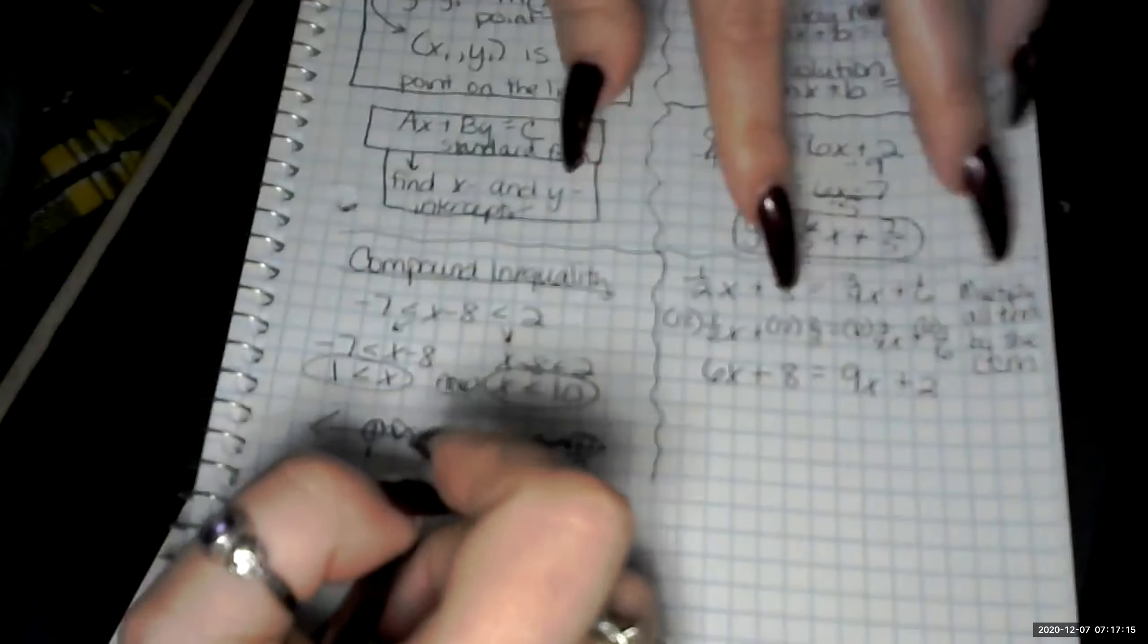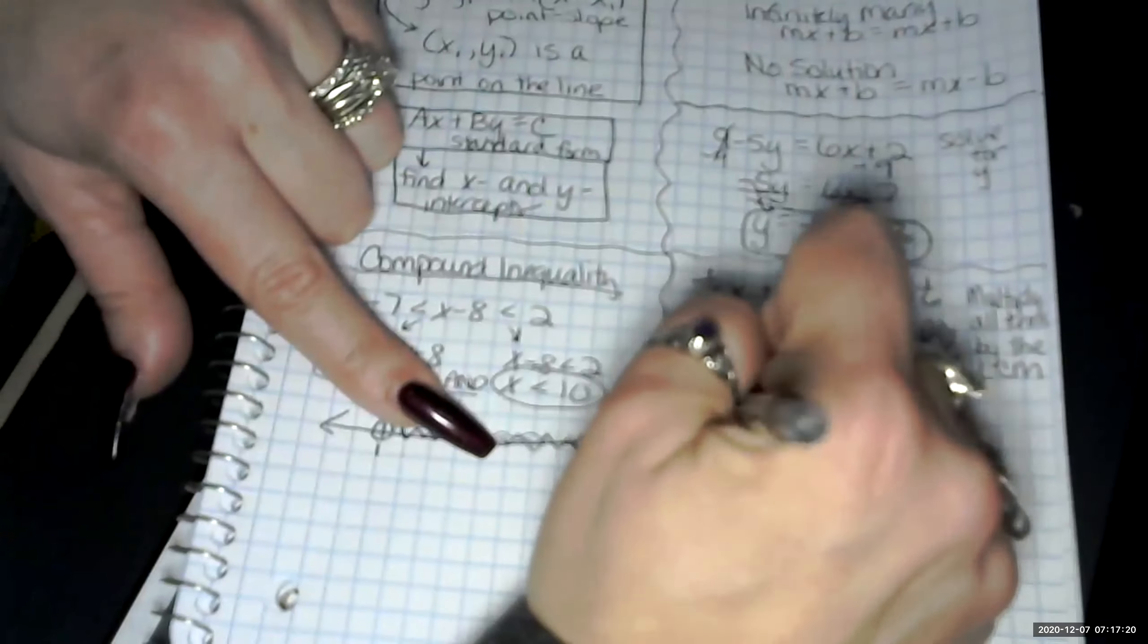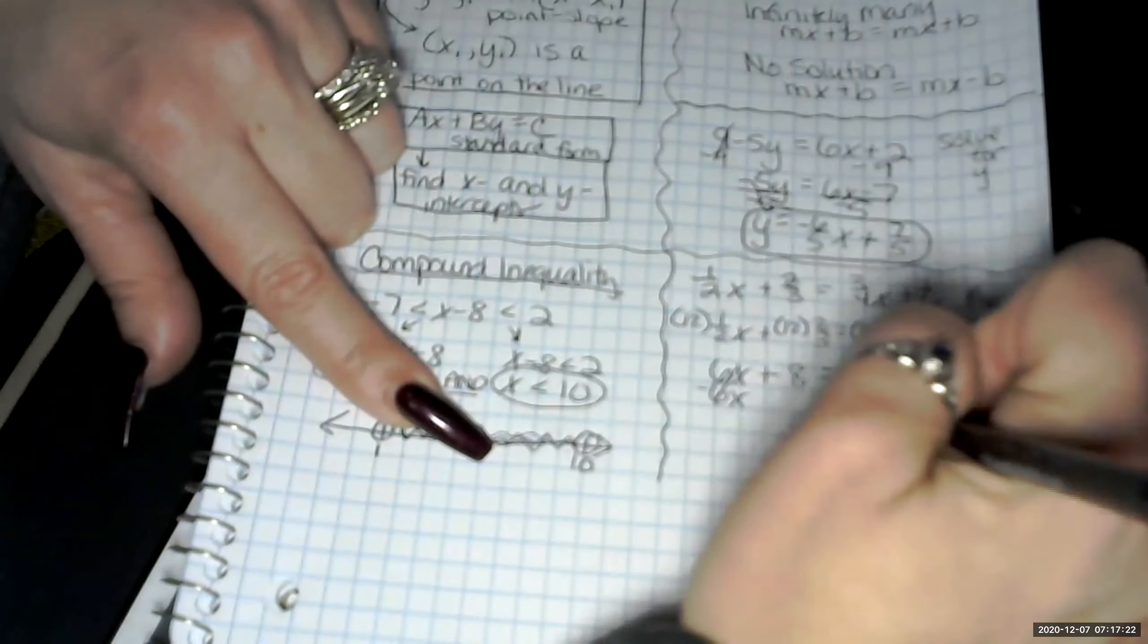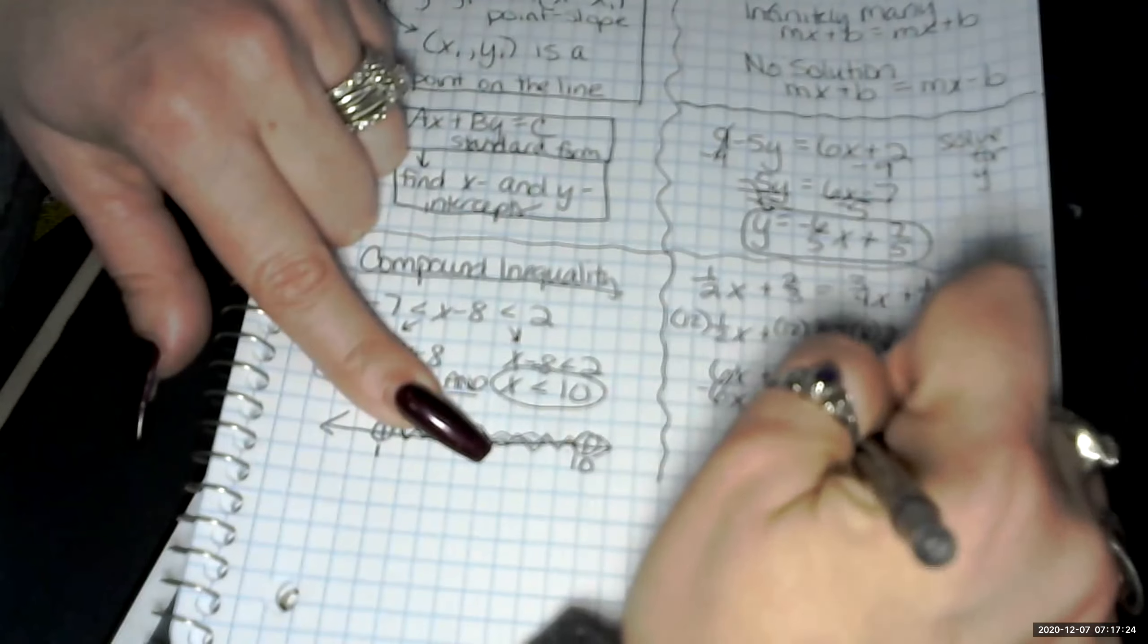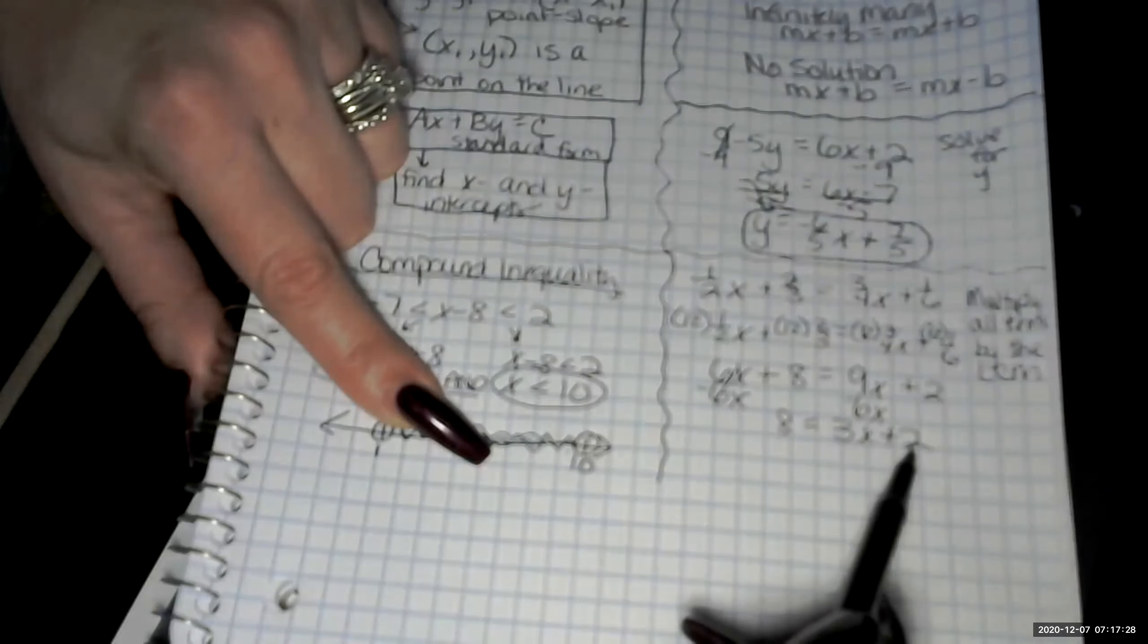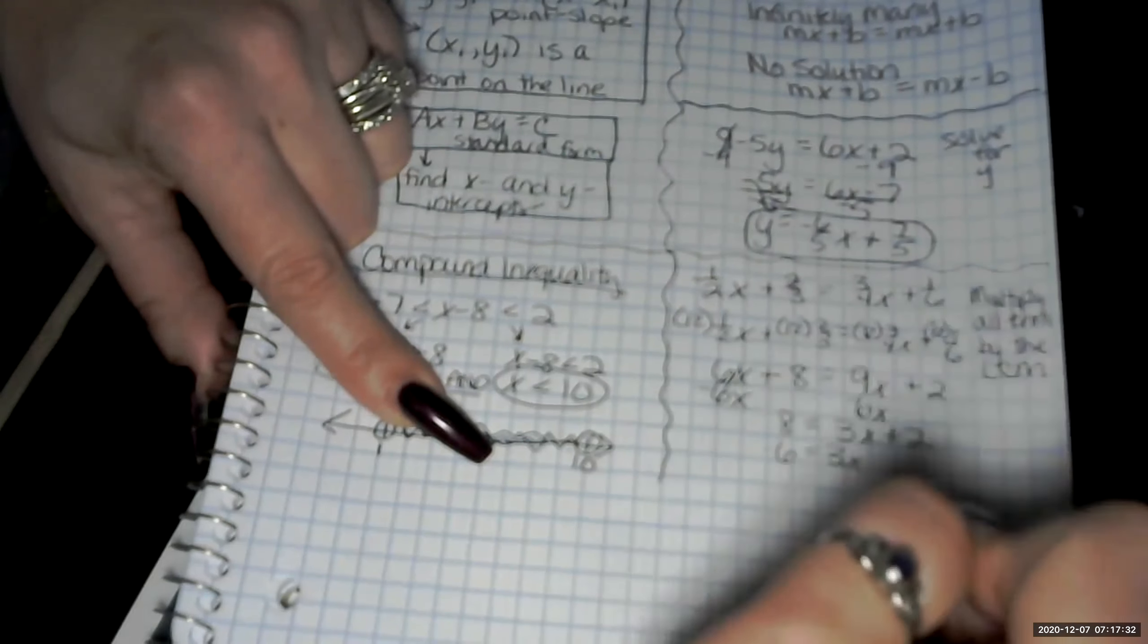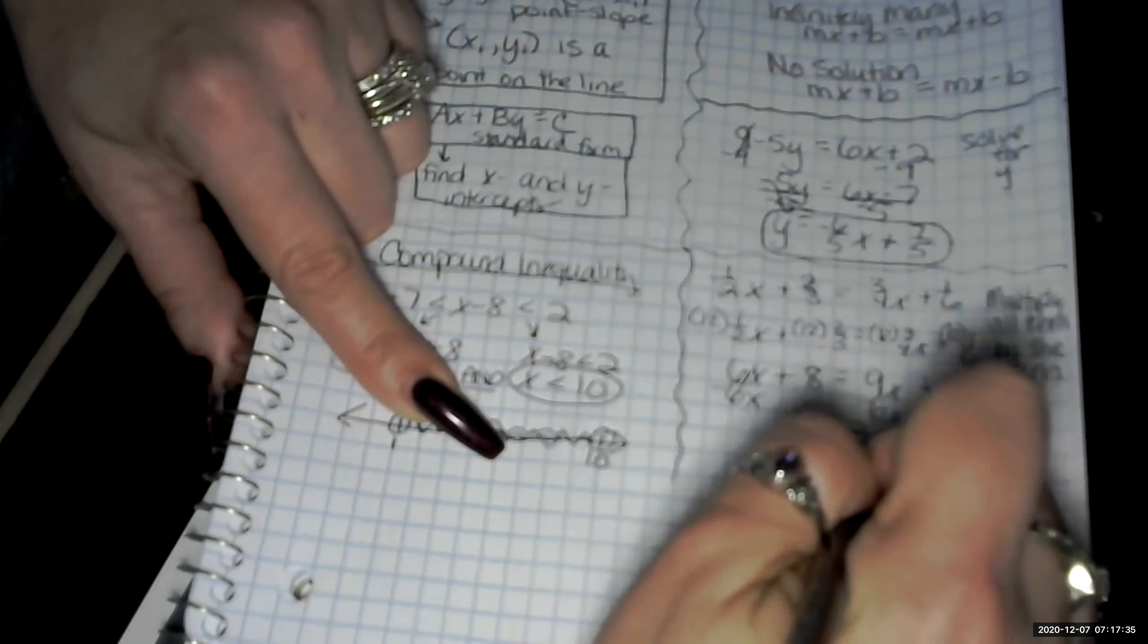Then we start to solve for x. 6 is smaller. We're going to subtract 6x from both sides. We get 8 equals 3x plus 2. And then we subtract the 2 from both sides. 6 equals 3x. So x equals 2.